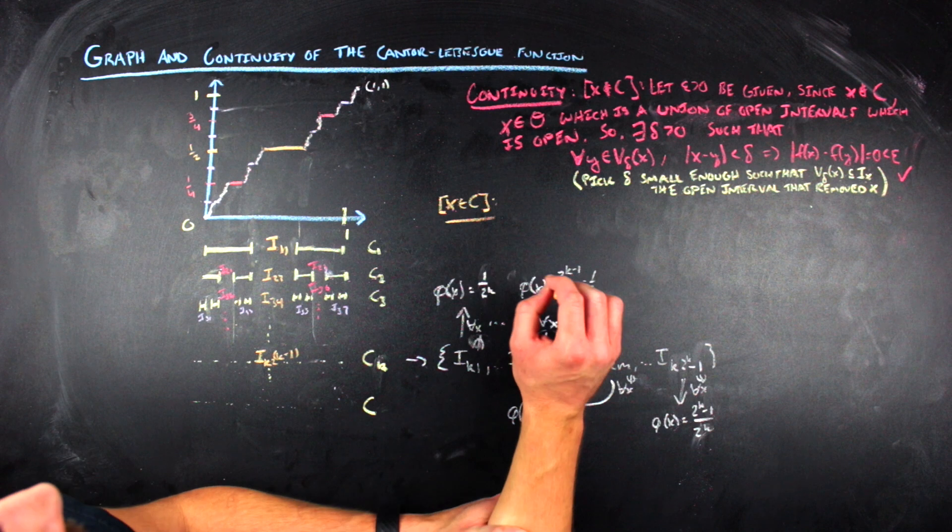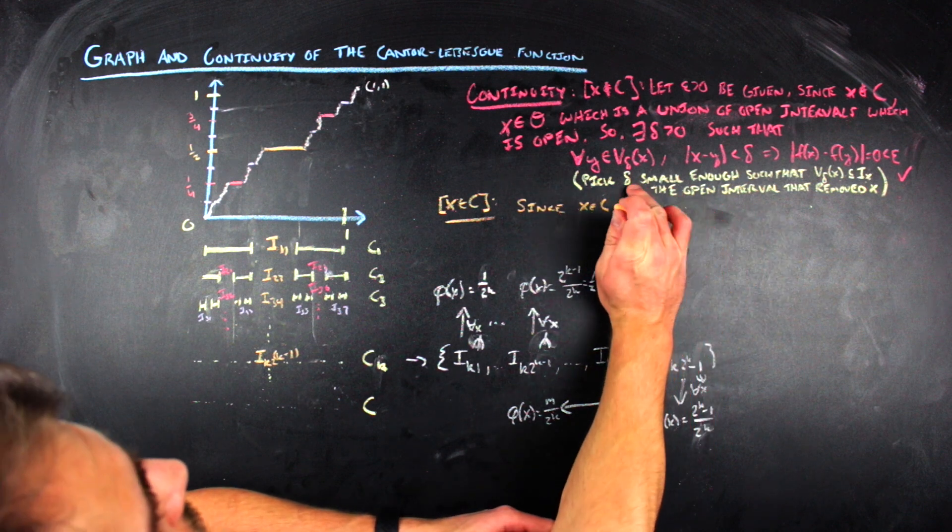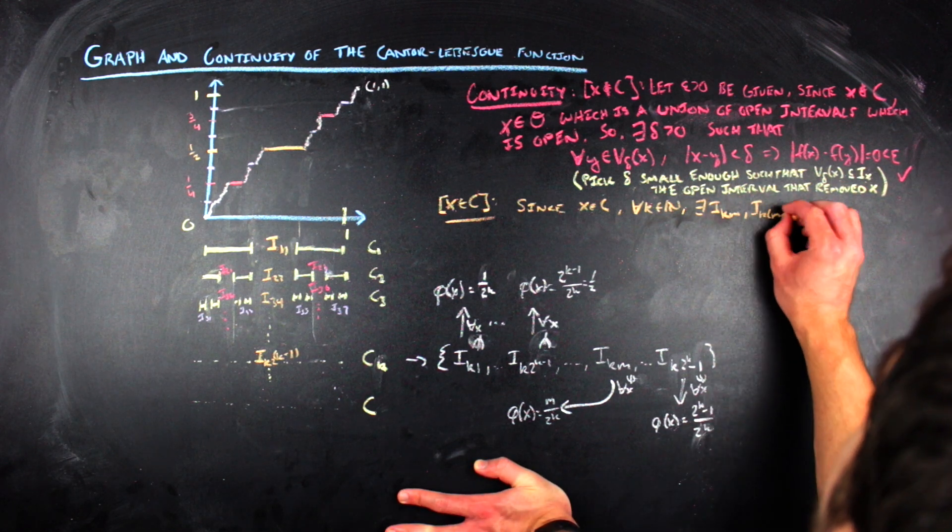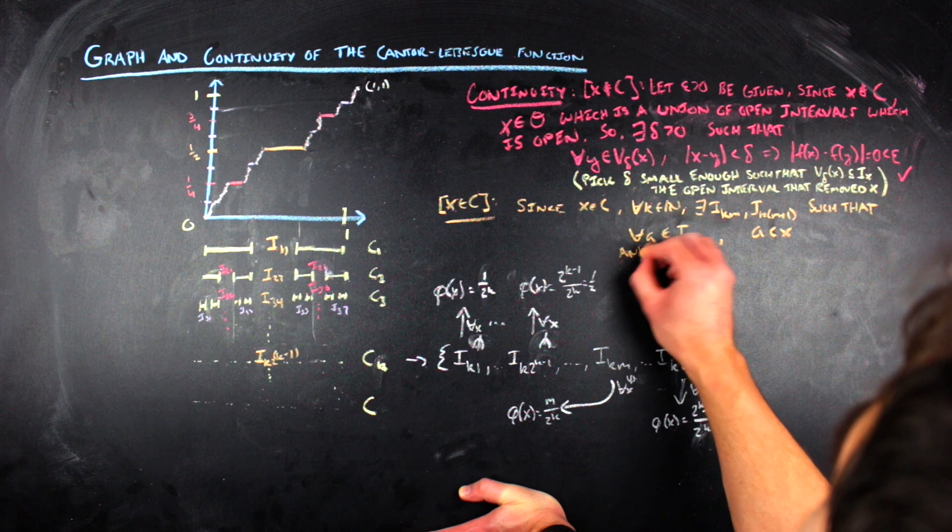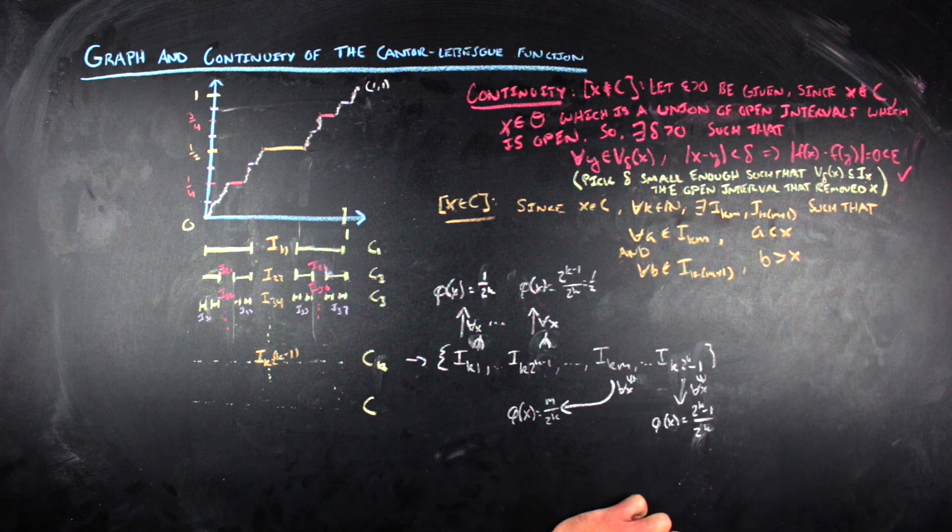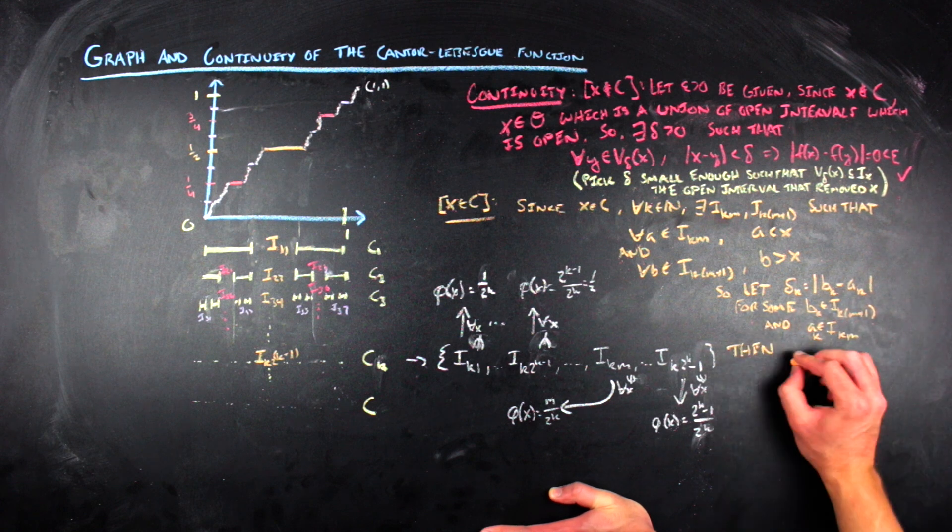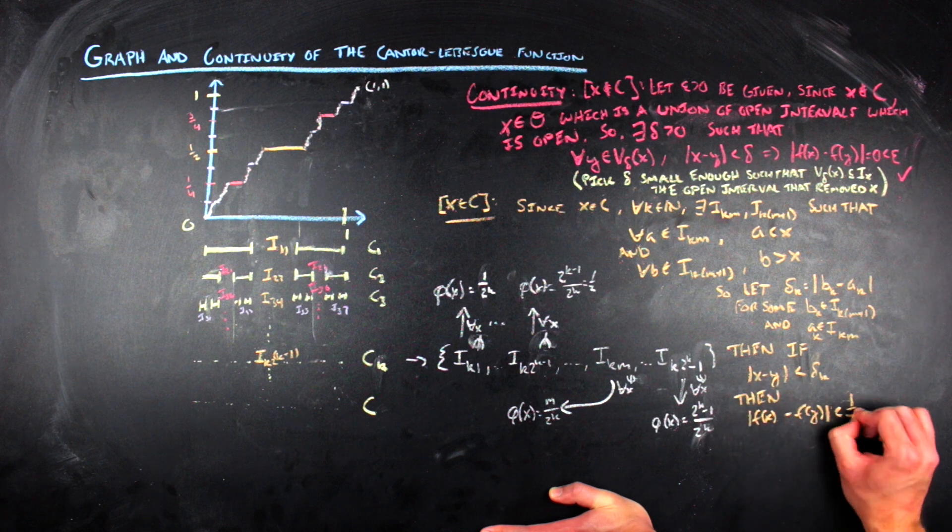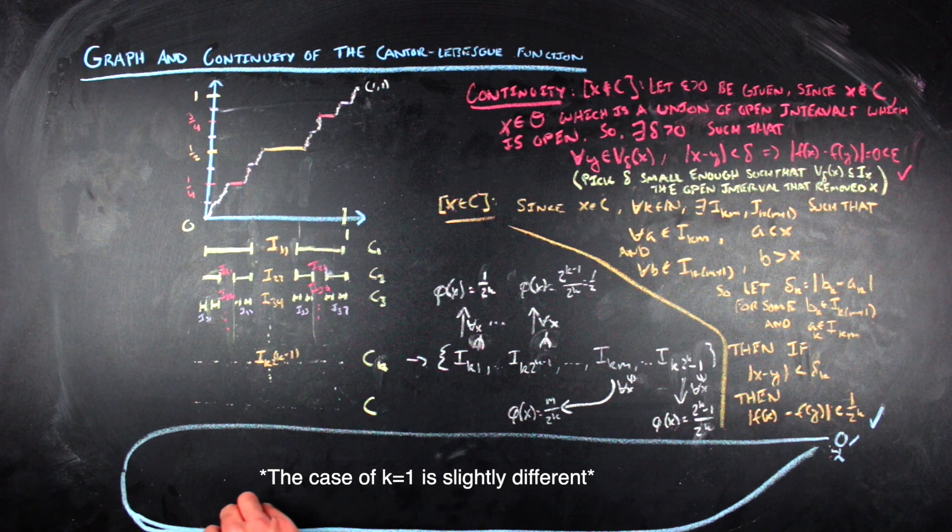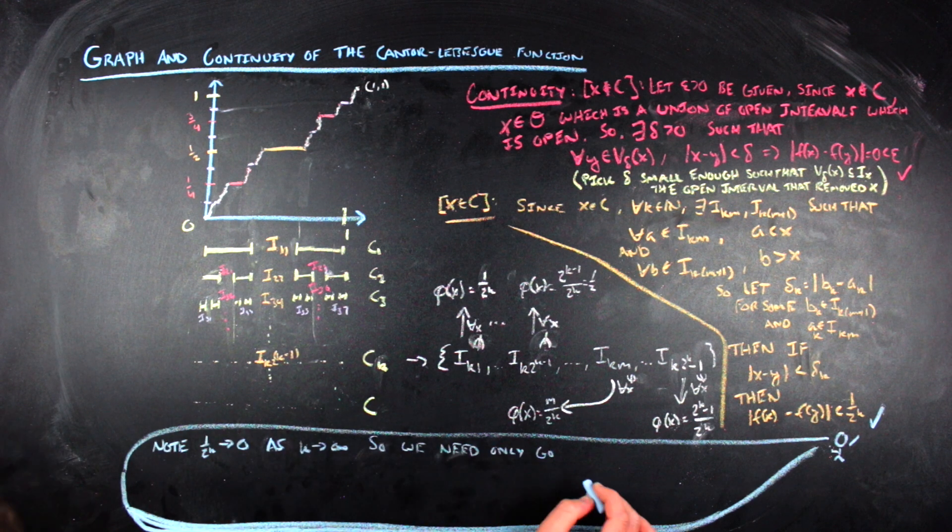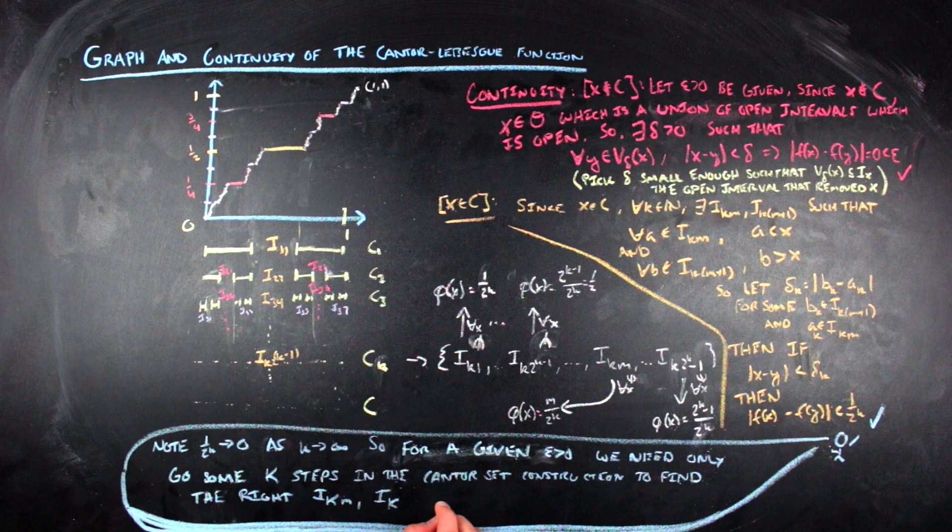The case where you're a point in the Cantor set is a little bit more involved. For each step in the Cantor set construction, there exists a first open set to the left of x and a first open set to the right of x that were removed at some point such that points in the left interval are all less than x and points in the right interval are greater than x. But then when we apply the Cantor-Lebesgue function to our two points of interest, we get something that is less than 1 over 2 to the k. Because the difference between the Cantor-Lebesgue function on that left interval and the right interval is just 1 over 2 to the k. We can do this for any step in the Cantor set construction. So for our given epsilon, we just need to figure out which k is large enough to satisfy the continuity condition. And so this implies we have continuity at points in the Cantor set.